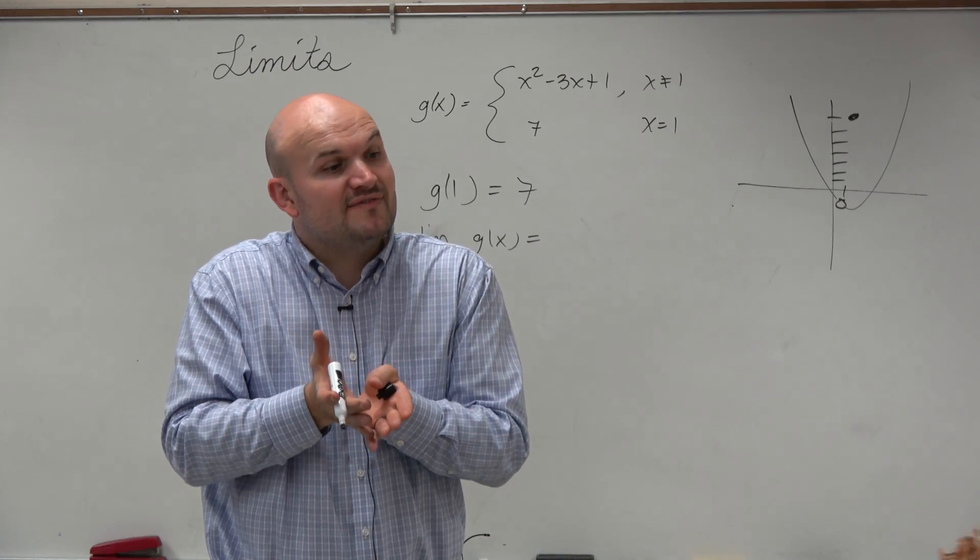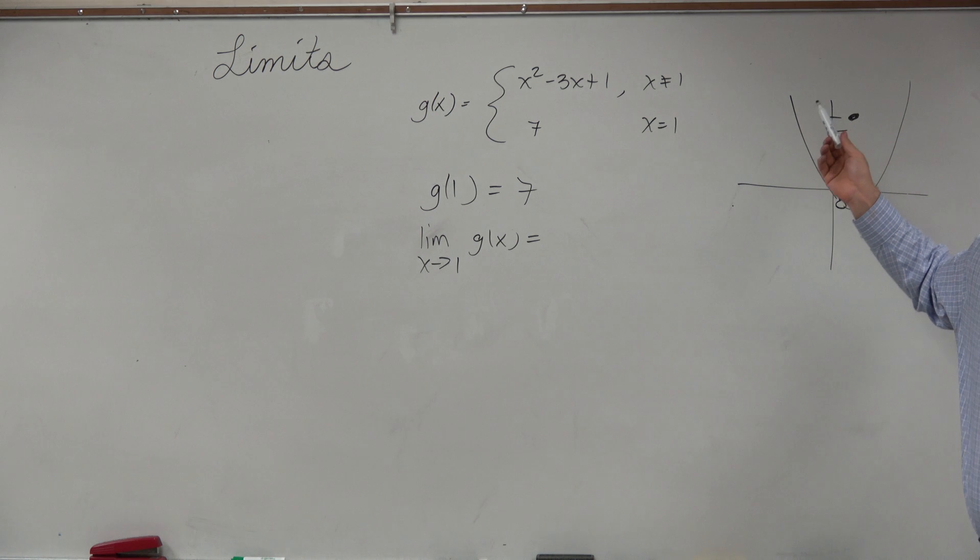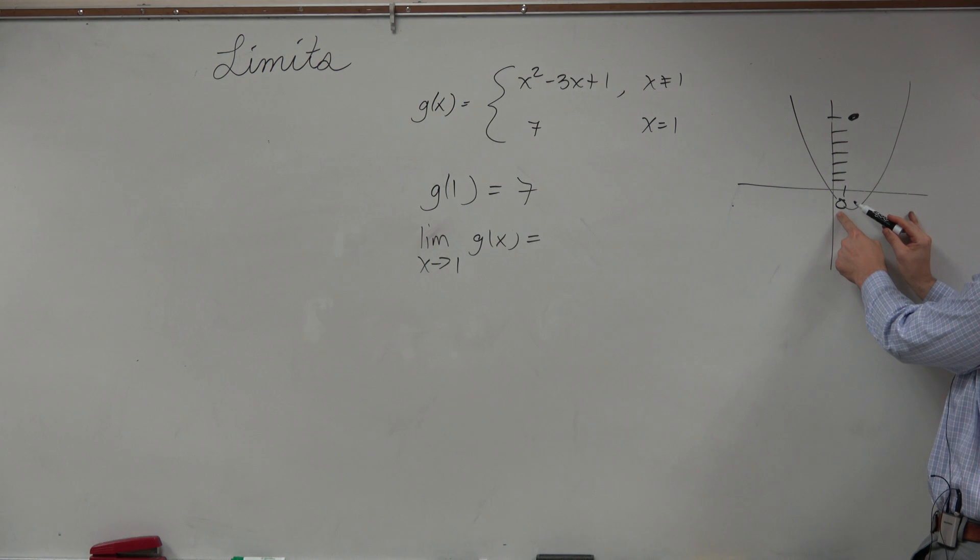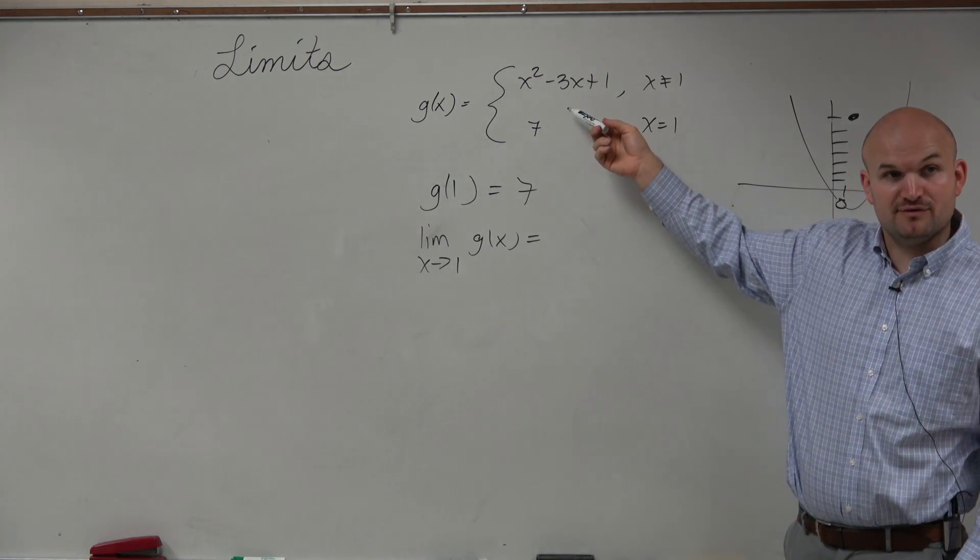Now, if we're looking for what is the value approaching, the graph isn't approaching 7. Would you guys agree? As we're getting closer and closer to 1, we're approaching the y value of this graph, correct? So that means we've got to find the y value of this graph.